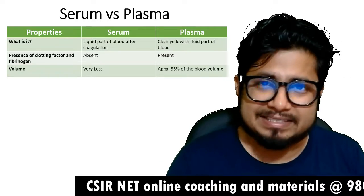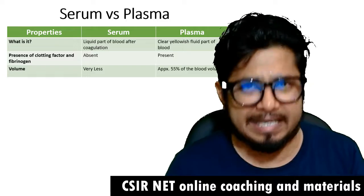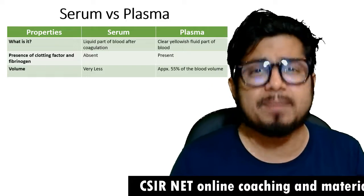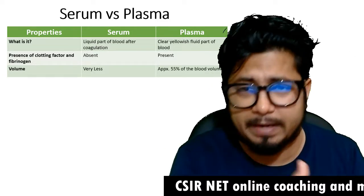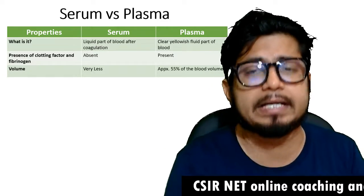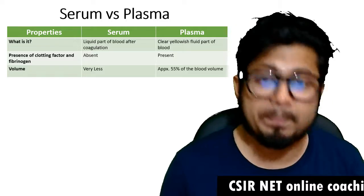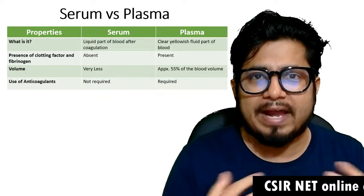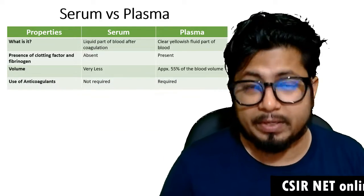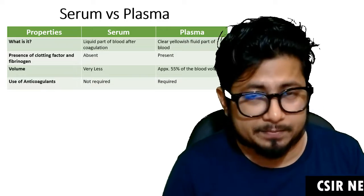The third important difference is volume. The serum volume is very small, while plasma volume in the blood is large — approximately 55% of the total blood volume is plasma.